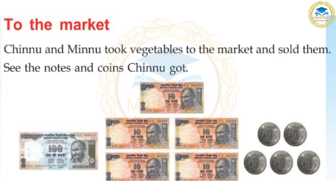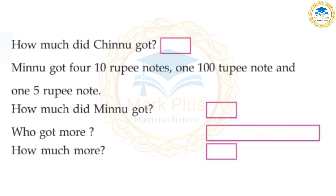Chinnu and Minnu took vegetables to the market and sold them. See the notes and coins Chinnu got. How much did Chinnu get? 100 rupee notes, 5 ten-rupee notes, and 1 coin. Minna got 4 ten-rupee notes, 100 rupee notes, and 5-rupee notes. Who got more? How much more?